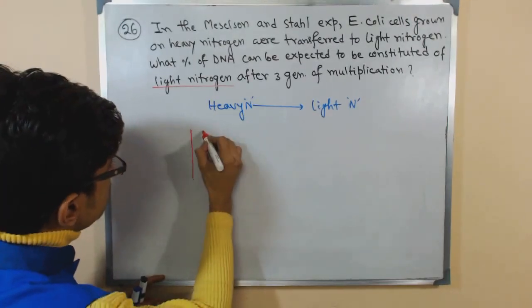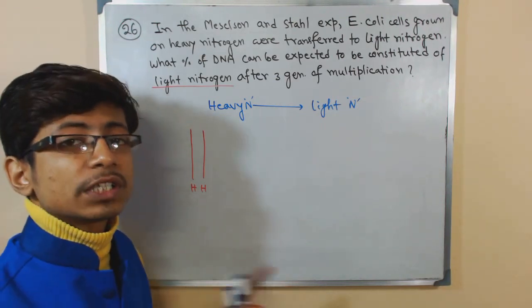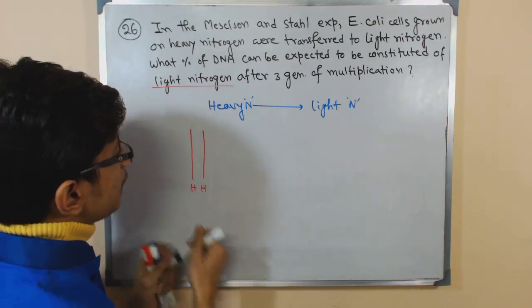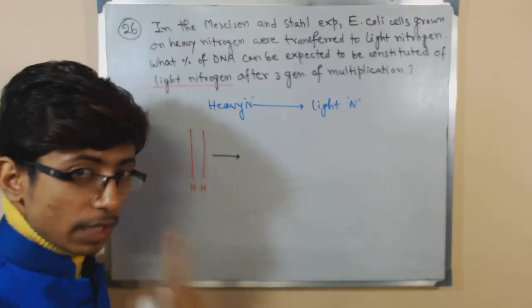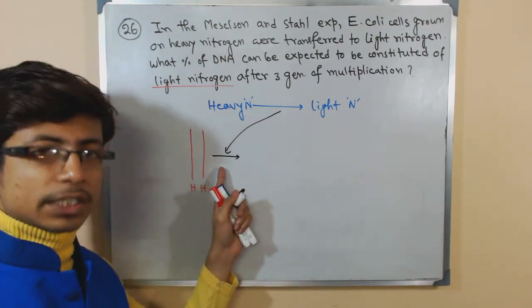And let us draw the heavy nitrogen with this red color. So heavy, heavy, both the chains are heavy, both the strands are heavy. And then they started to divide, started to replicate after the transfer. So here goes the transfer. The transfer thing occurs now.